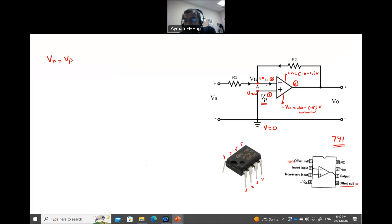The second rule that the current that goes into the op-amp, so this is current I in the negative terminal and I in the positive terminal, both IN is equal to IP is equal to 0. So in ideal op-amp analysis, the current that enters the op-amp is equal to 0. These are the most two important rules to analyze any op-amp circuit.